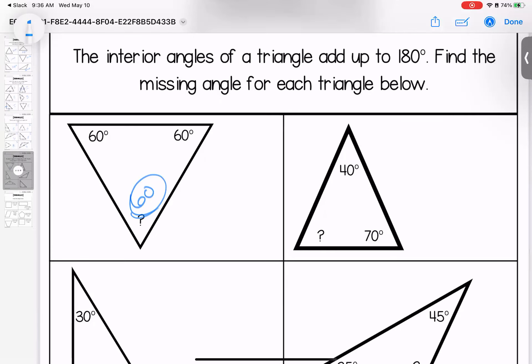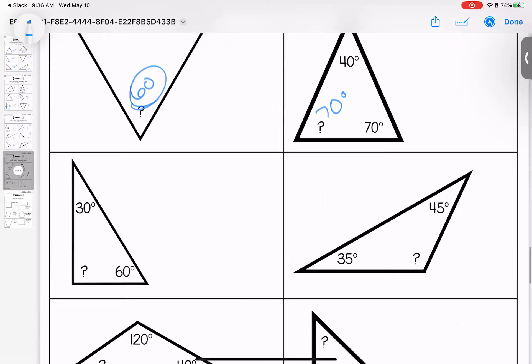Over here, 70 plus 40 gives us 110, which means there's a 70 degree angle missing. Here we have 60 plus 30 is 90, which means this is a right angle, 90 degrees missing.